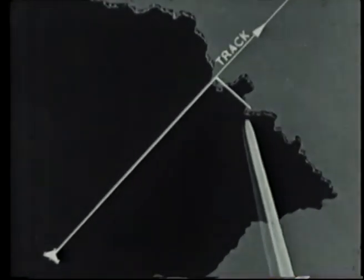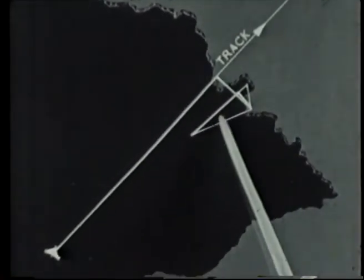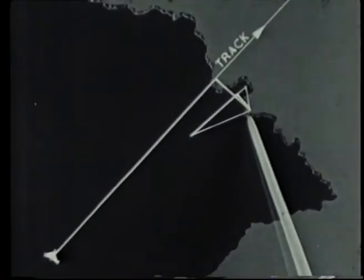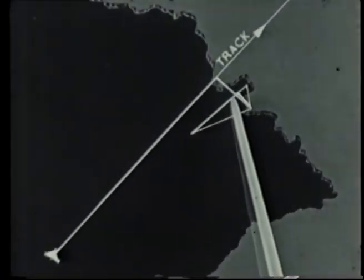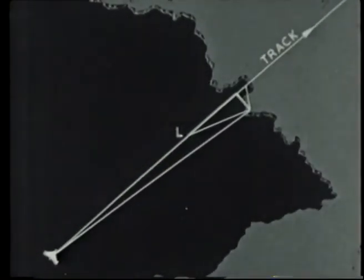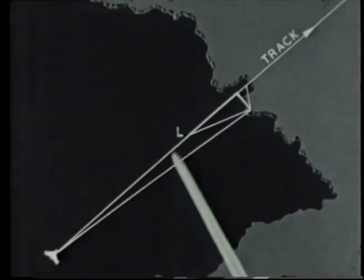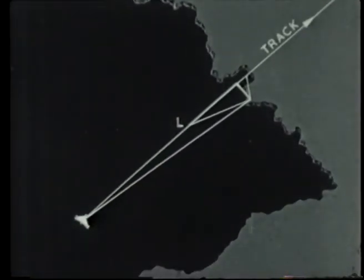The problem of dropping a bomb onto the target is solved in three stages. First, the forward throw and cross trail of the bomb are calculated. Secondly, cross range is compared with cross trail and the aircraft is steered on such a track that they are equal. And thirdly, track range is compared with forward throw so that when the two are equal, the bombs are released.